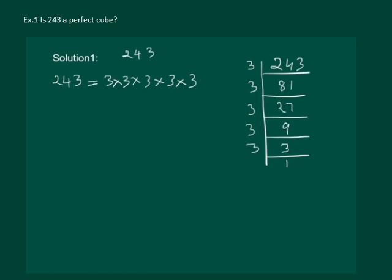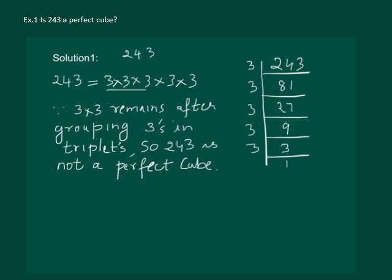Now let us try to group them into 3s. In this we can see that 3 into 3 remains after grouping 3s into triplets. Therefore 243 is not a perfect cube. Since 3 into 3 remains after grouping 3s in triplets, 243 is not a perfect cube.